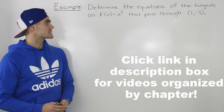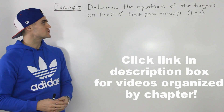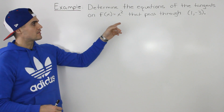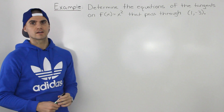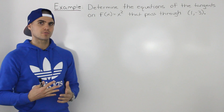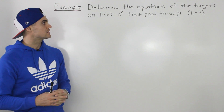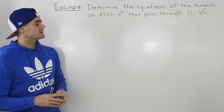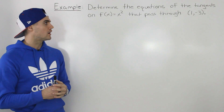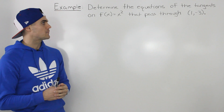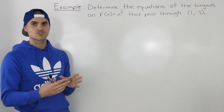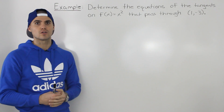What's up everybody? Moving on to the next example, we have to determine the equations of the tangents on the function x squared that pass through the point (1, -3). Now this question is pretty difficult — it's actually probably one of the tougher questions you'll get in this course. The algebra is not going to be difficult, but just setting everything up and seeing what's actually going on is going to be difficult. So I'm going to do my best to explain it, using a lot of diagrams and algebra. Try your best to follow along.